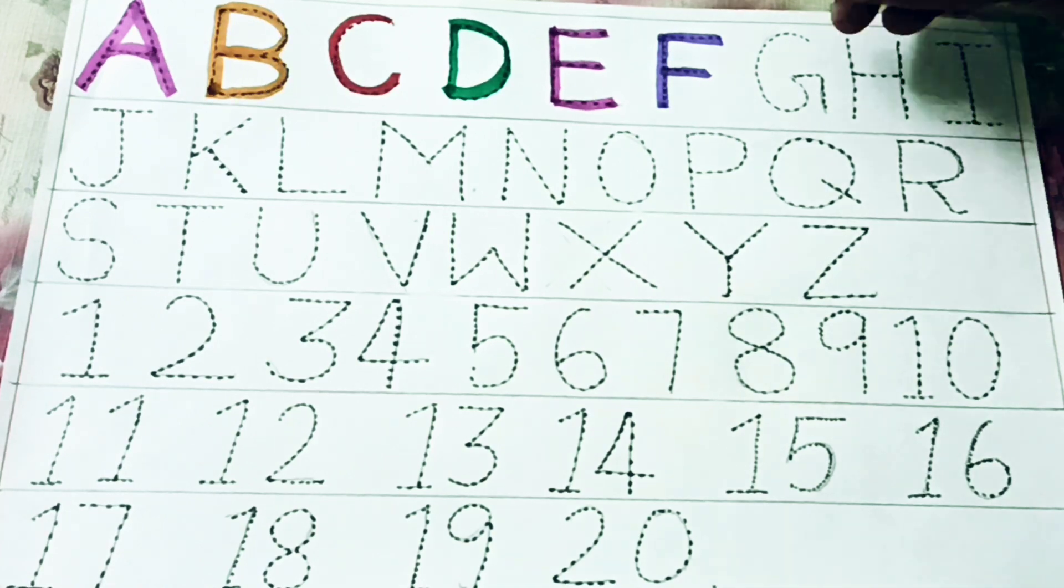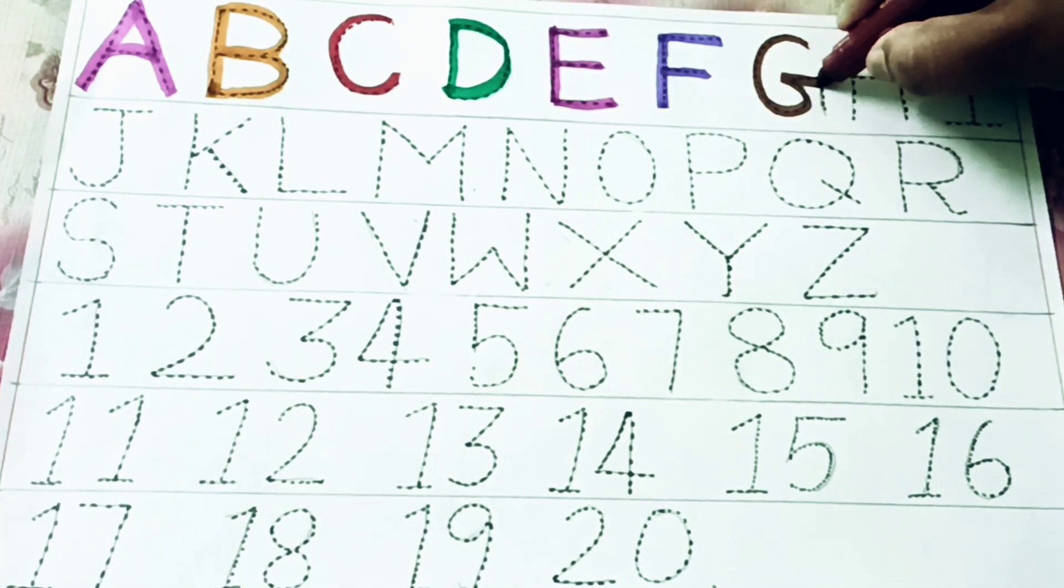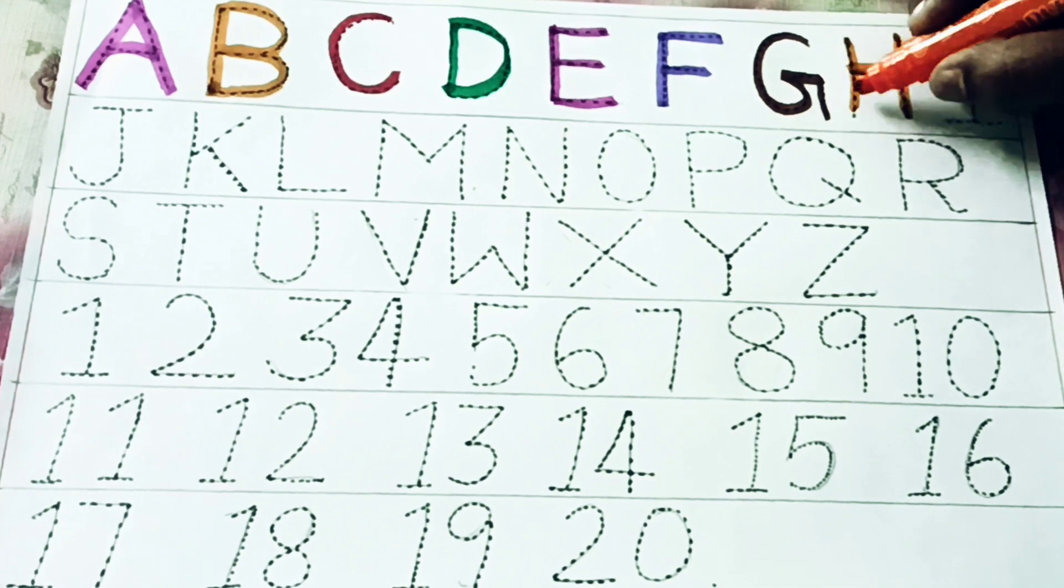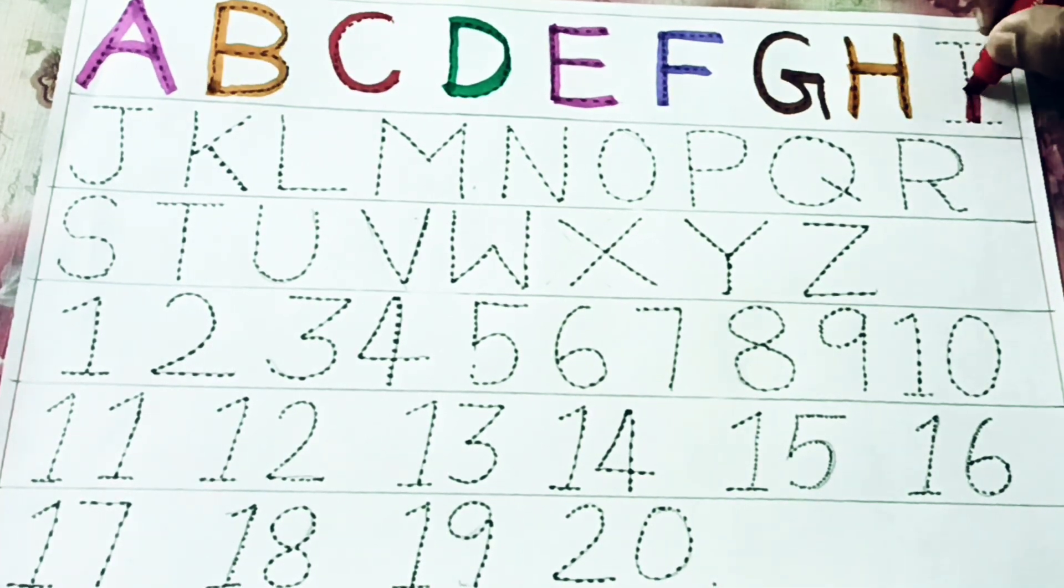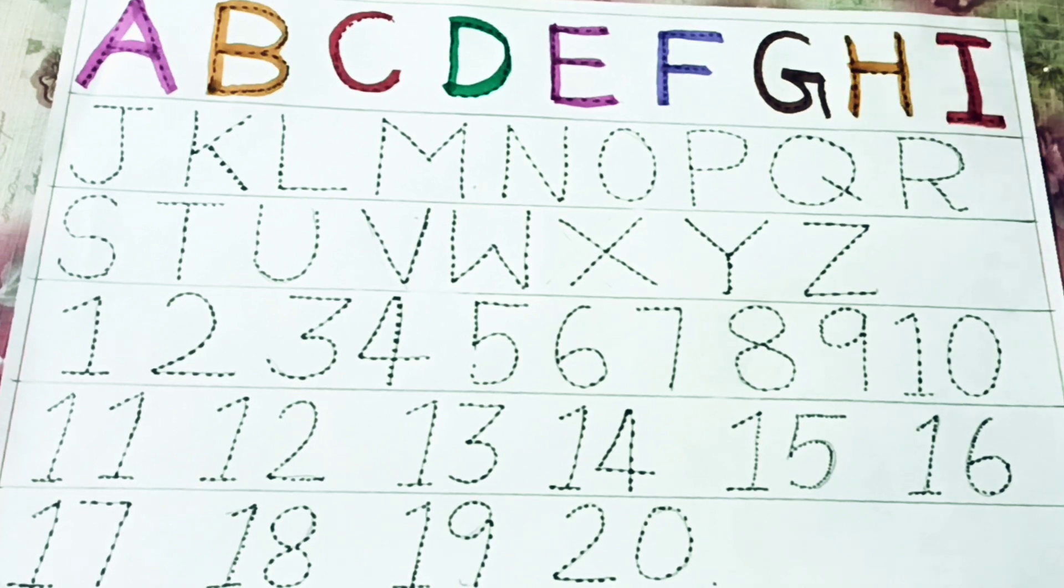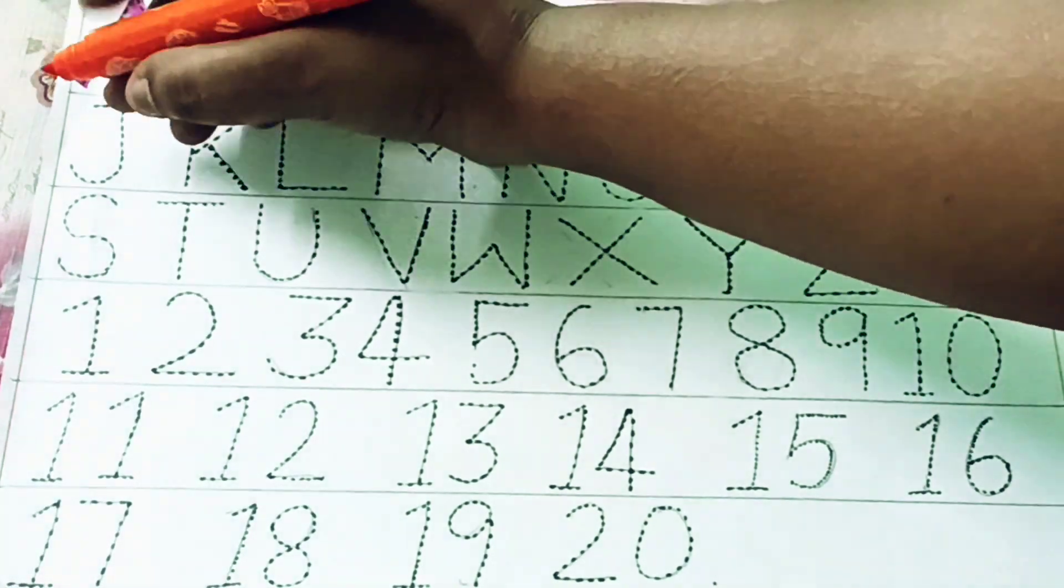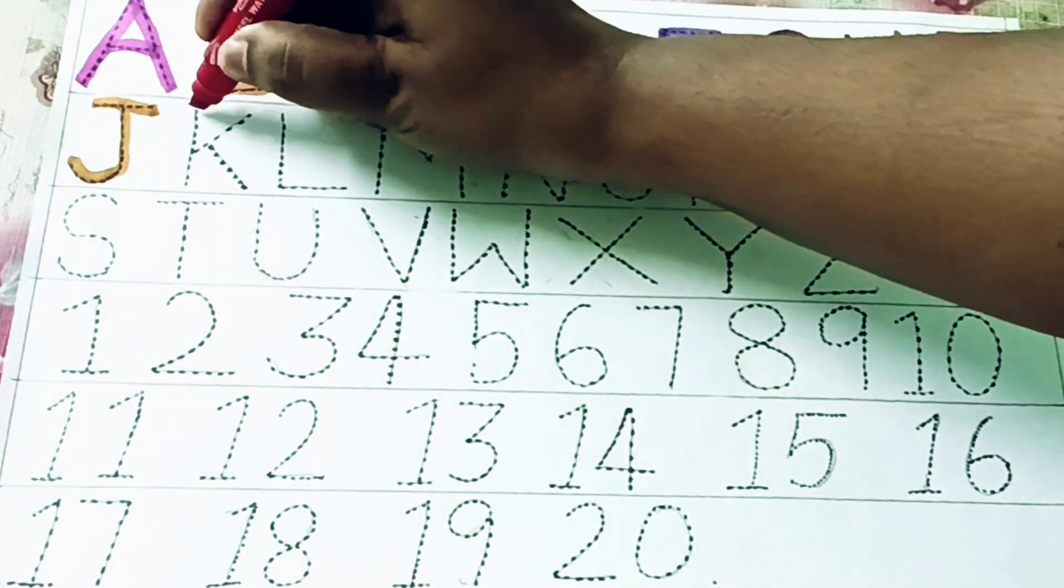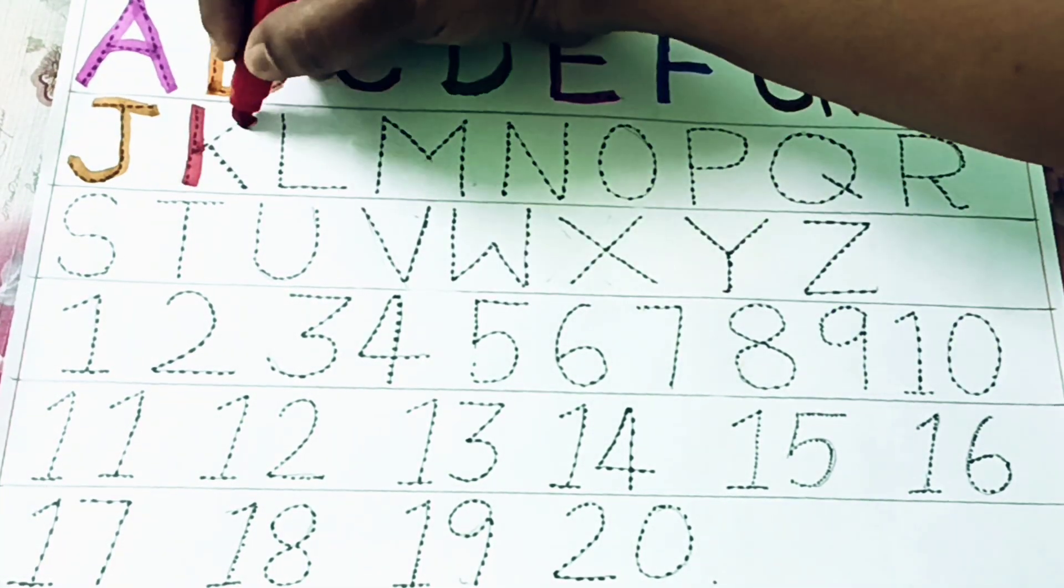G for giraffe, H for horse, I for igloo, J for jug, K for king.